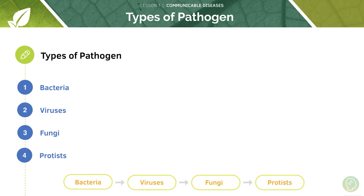Now let's look at the types of pathogen that there are. There are many different types of pathogens which can cause varying types of disease. Bacteria, viruses, protists and fungi can all be pathogens. An example of a virus pathogen would be HIV, which causes AIDS.